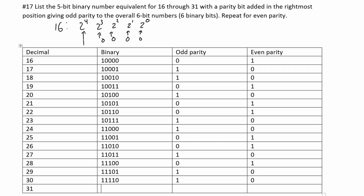Lastly, for 31, it's just 30 plus 1, so we're going to have 1 1 1 1 1. We can see here we have five ones — that is odd — so we're going to have a 0 for our odd parity and a 1 for our even parity. And that is how you would go about filling out the table for this problem.